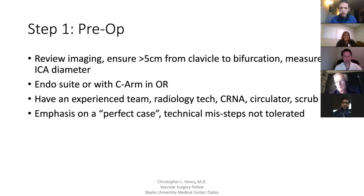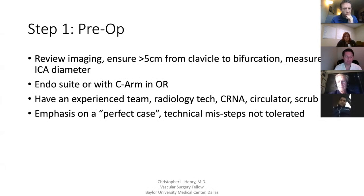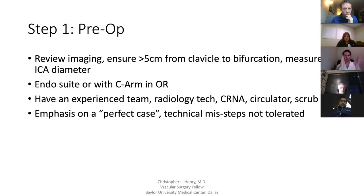Preoperatively, review the imaging. CTA head and neck is our typical modality. Ensure there's greater than five centimeters from the clavicle to the bifurcation, then measure the ICA diameter. Preferably we like to do this in our endovascular suite; if that's being used, we'll do CRM in an OR.